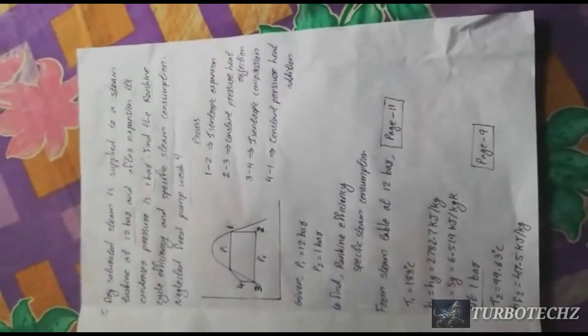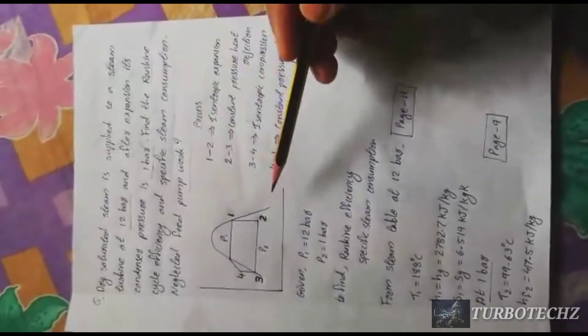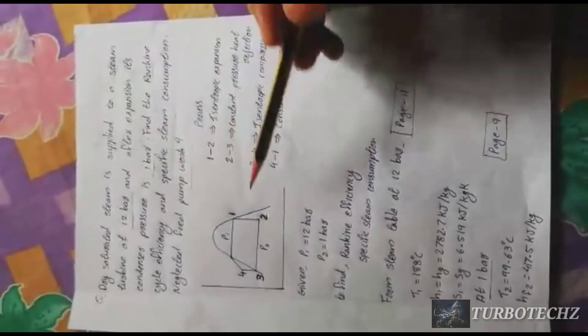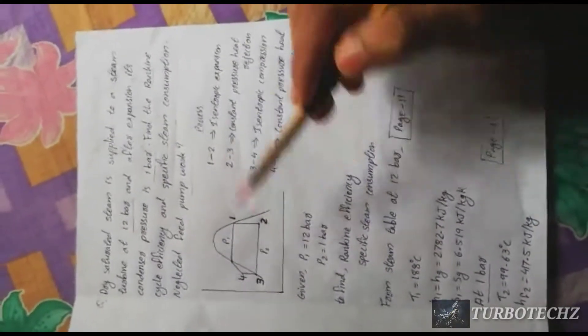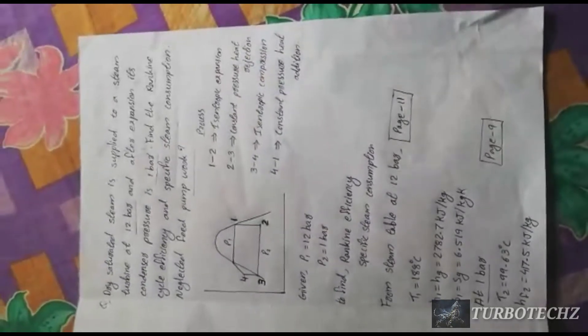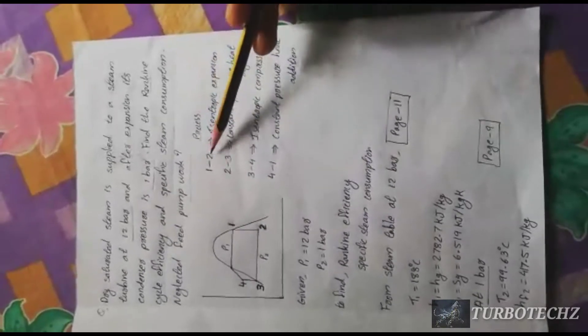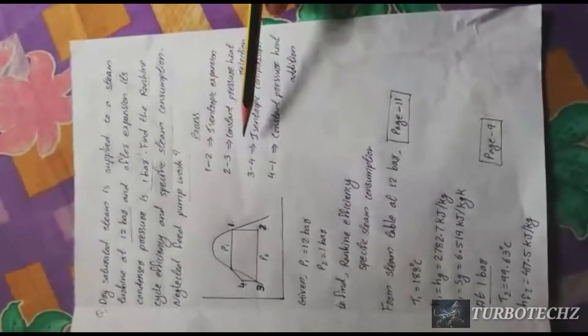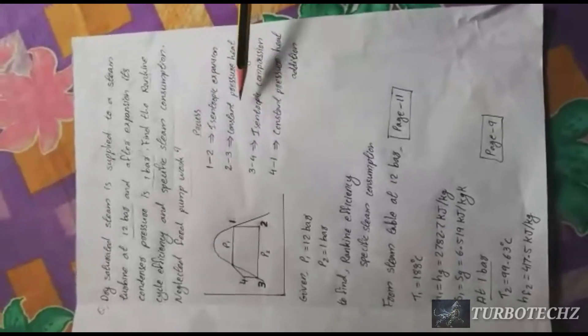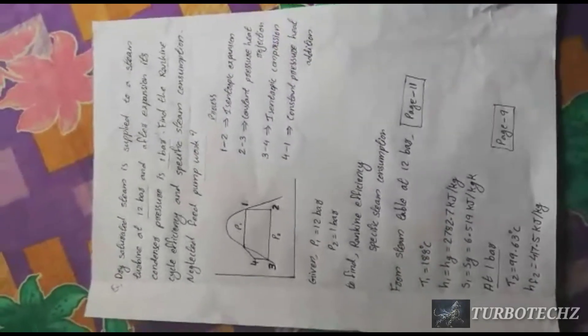Neglect the feed pump work. Now the figure: saturated steam. Process 1 to 2 is isentropic expansion, 2 to 3 constant pressure heat rejection, 3 to 4 isentropic compression, 4 to 1 constant pressure heat addition.